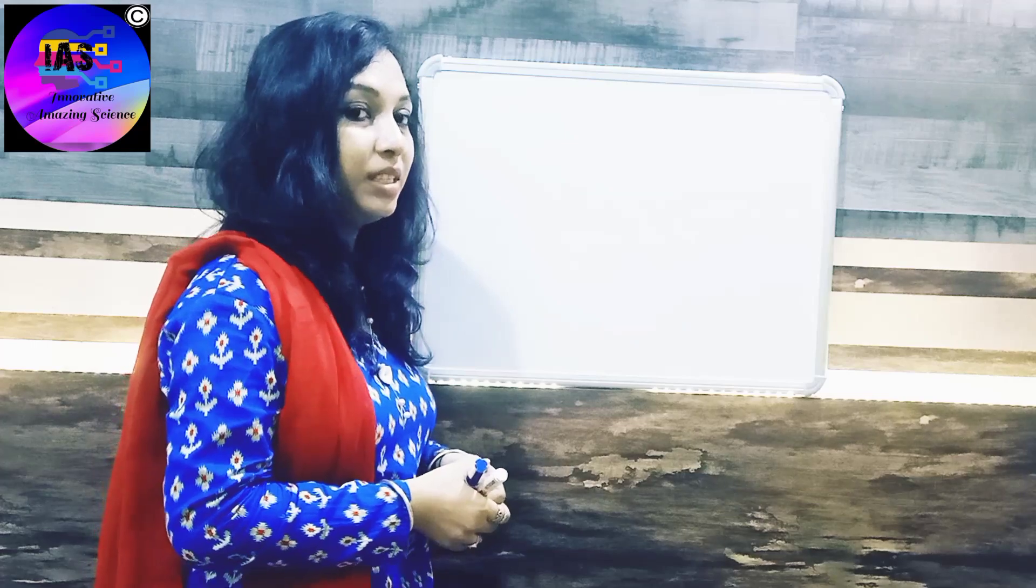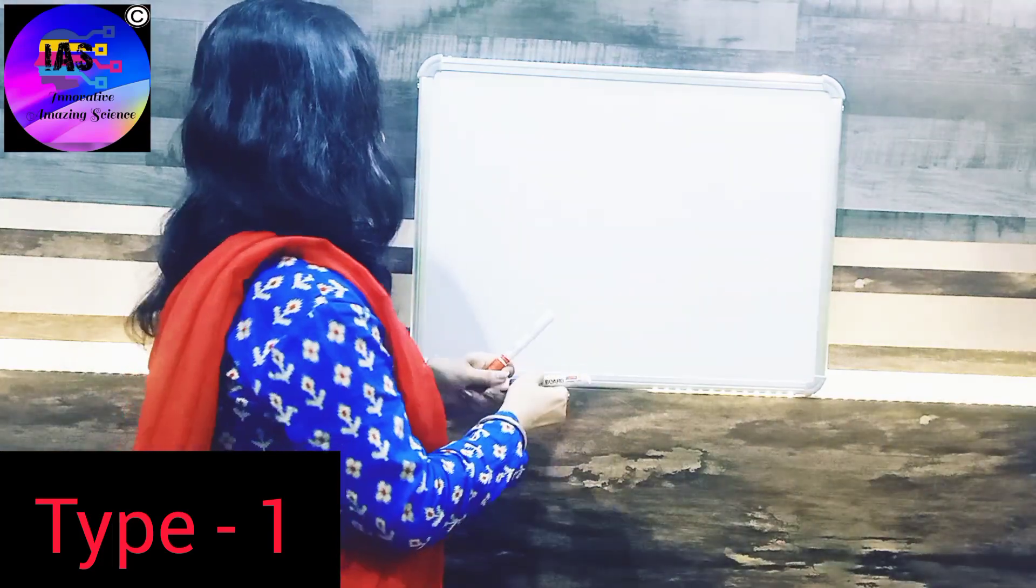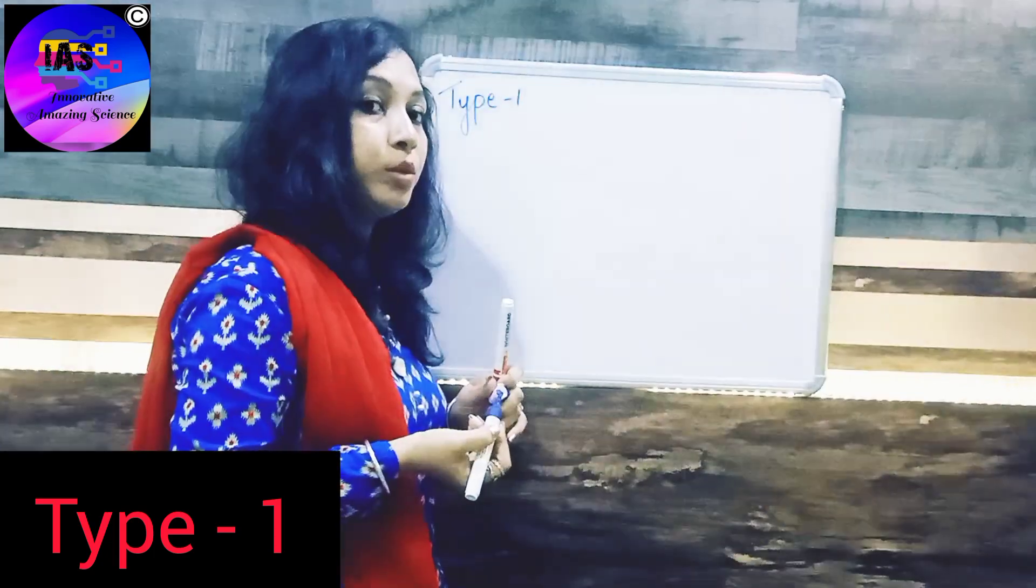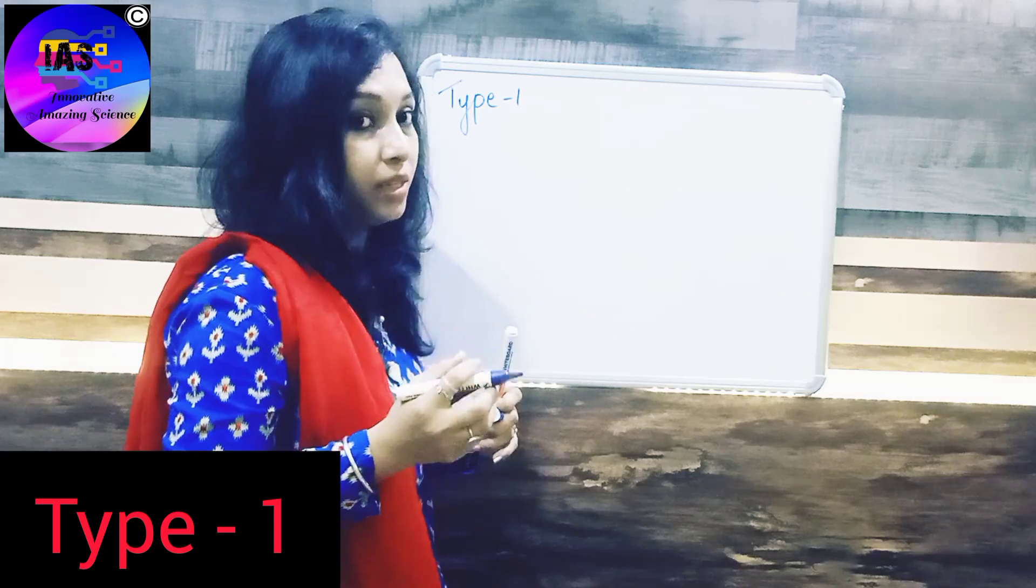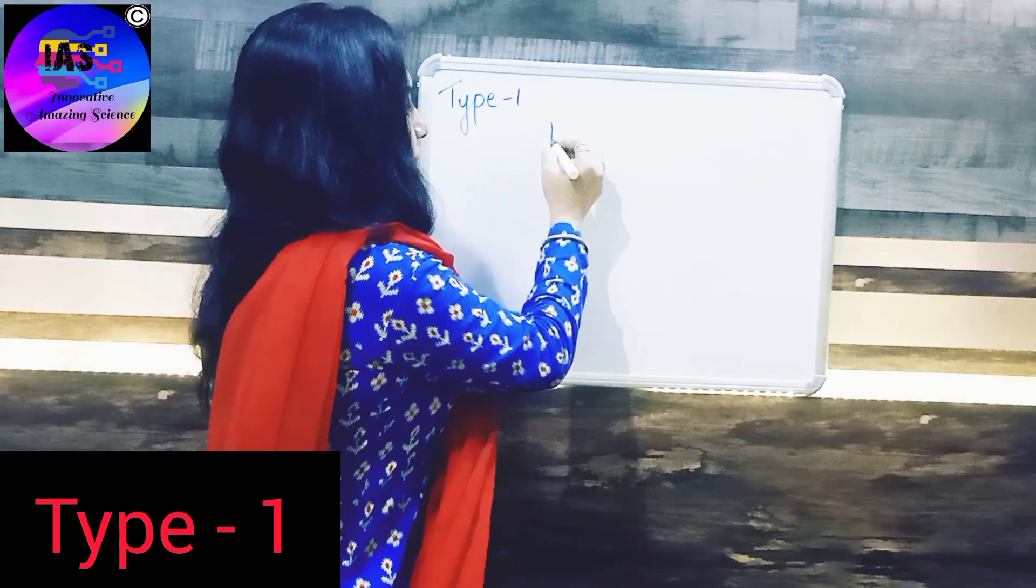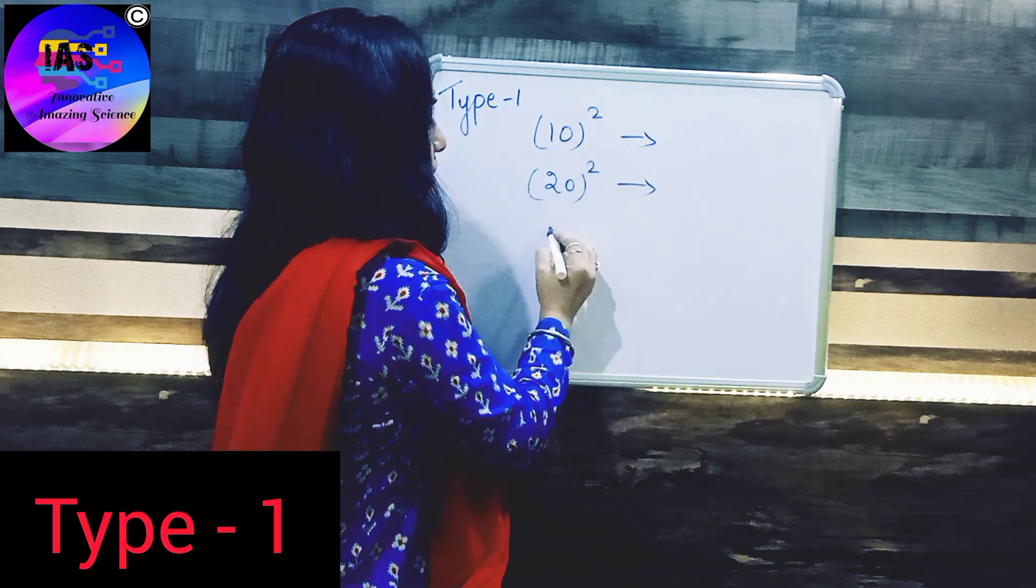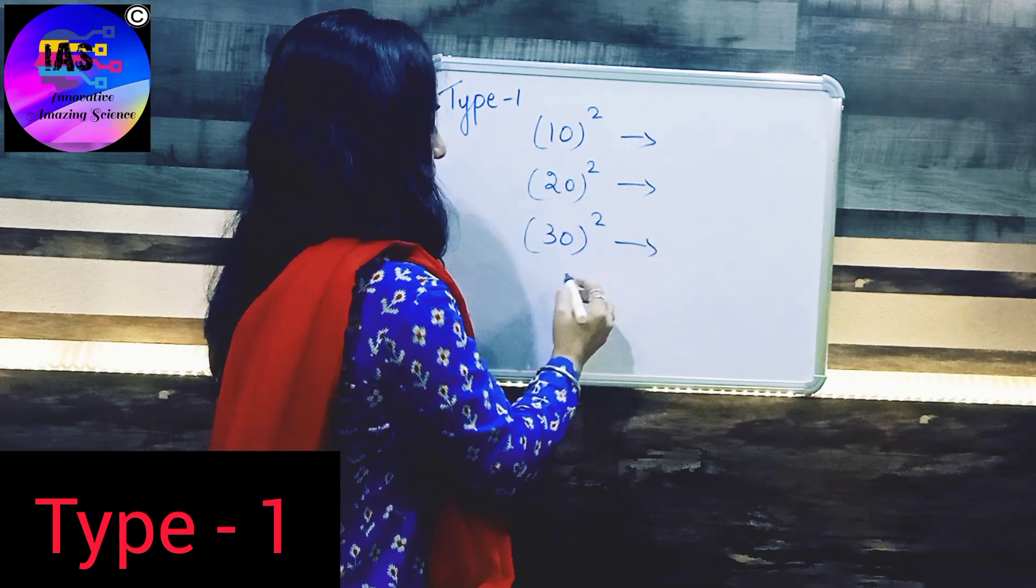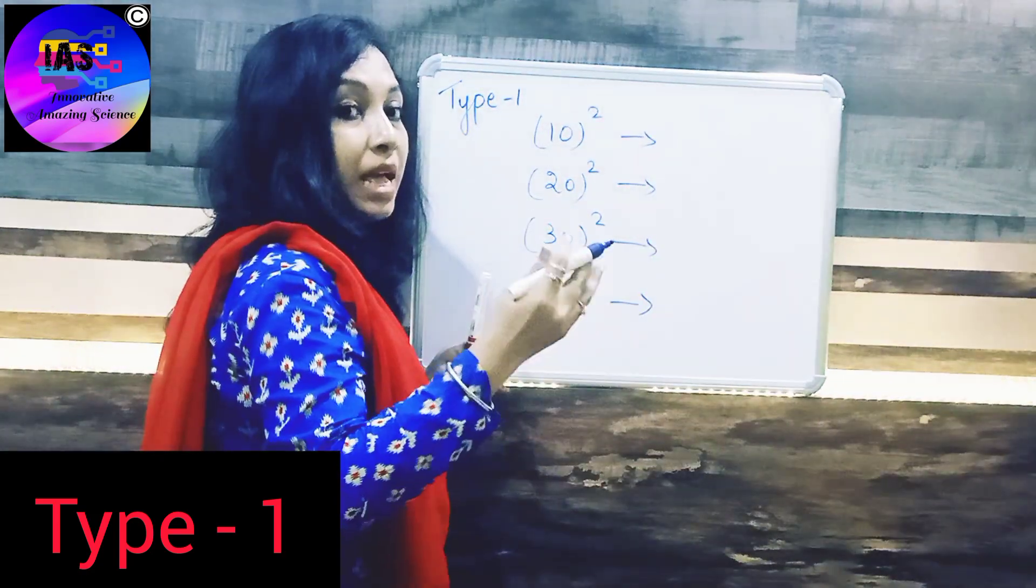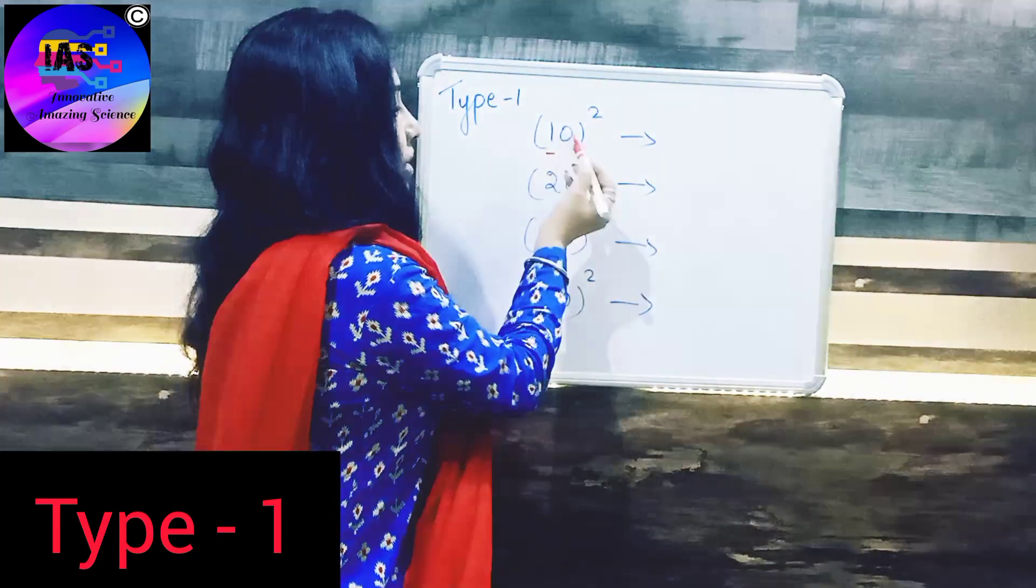So today we are going to learn three methods of finding squares. Let's see Type 1. In this method, we will take such numbers which end with zero - that means in the ones place it should have zero. So let's take numbers like 10 square, 20 square, 30 square, and 40 square. If you observe, zero is common at the ones place.